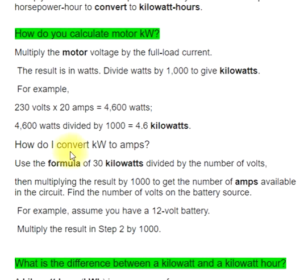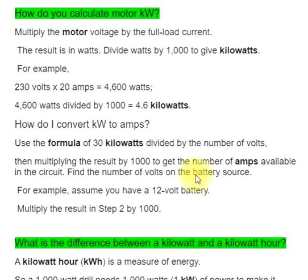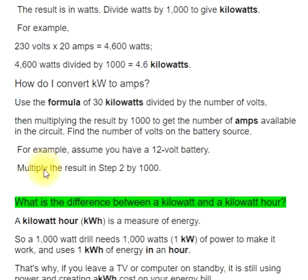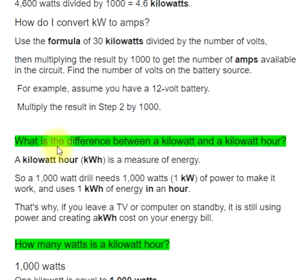How do I convert kW to amps? Use the formula of 30 kilowatts divided by the number of volts, then multiply the result by 1000 to get the number of amps available in the circuit. Find the number of volts on the battery source — for example, assume you have a 12-volt battery. Multiply the result by 1000.